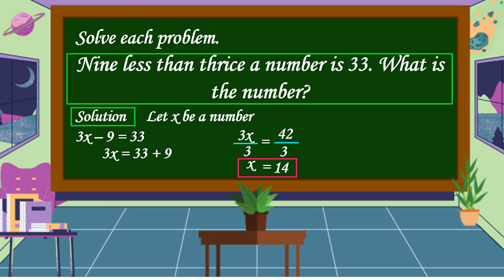14 is our number. Let's check if our answer is correct using the original equation: 3x minus 9 is equal to 33. Substituting: 3 times 14 minus 9 is equal to 33. 3 times 14 is 42, minus 9 is equal to 33. The other side is also 33, so our equation is balanced. Therefore, our answer is correct.